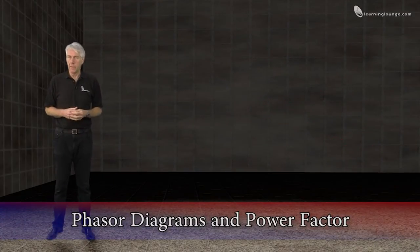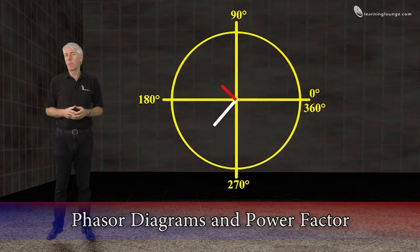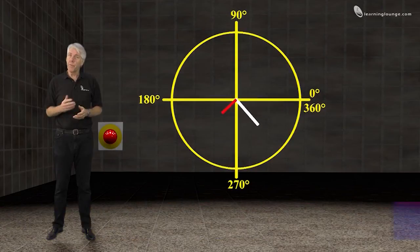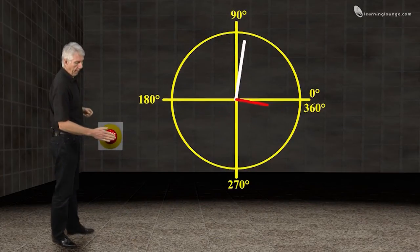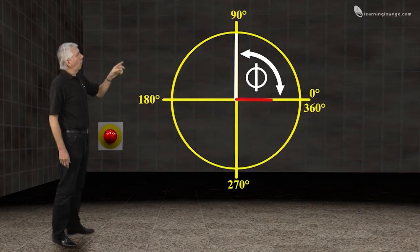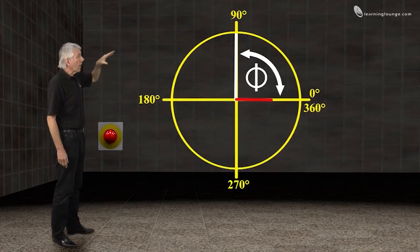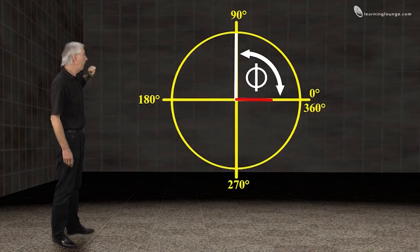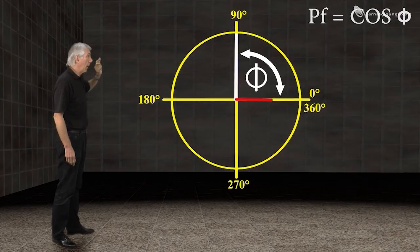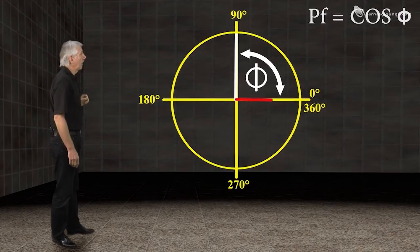From a power factor perspective, using phasor diagrams make it much simpler to determine the angle phi between voltage and current. Once we know phi, we can use our simple formula to determine the power factor, and that is the power factor is equal to the cosine of the angle phi.